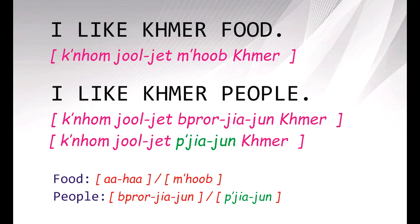Below is the vocabulary for food. For food, we have two words: 'aha' is a bit more formal, and 'mhob' is more common. So you can say 'aha Khmer' or 'mhob Khmer' for Khmer food. And for people, we say 'bạchia chun'. So: I like Khmer food — khnjom chol chach mhob Khmer. I like Khmer people — khnjom chol chach bạchia chun Khmer.